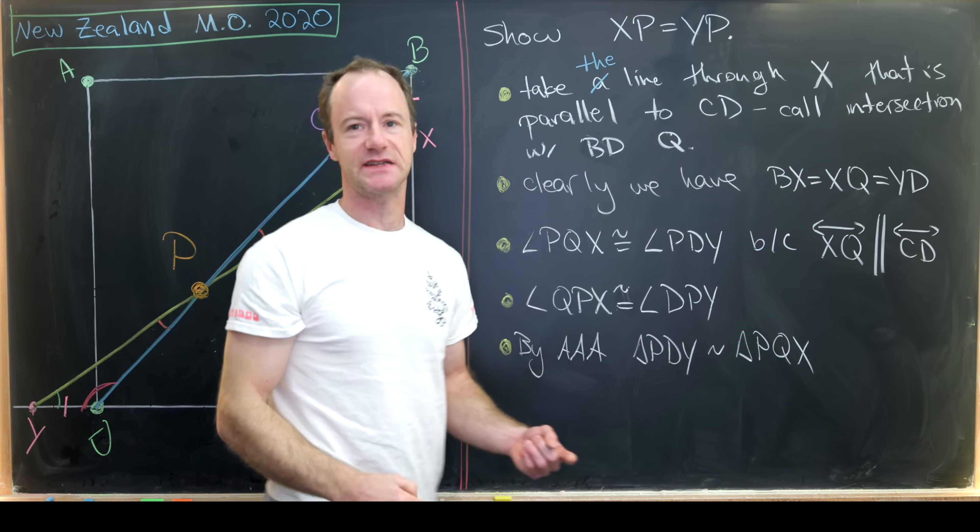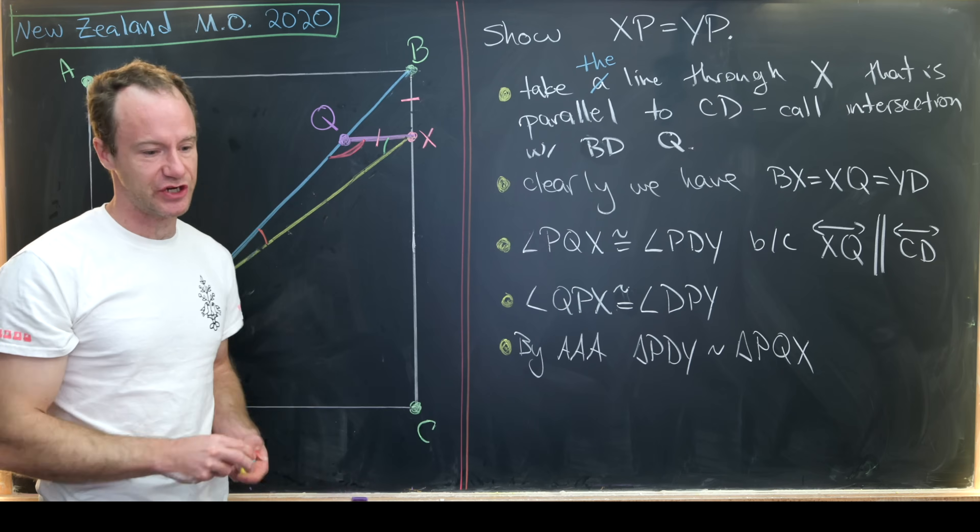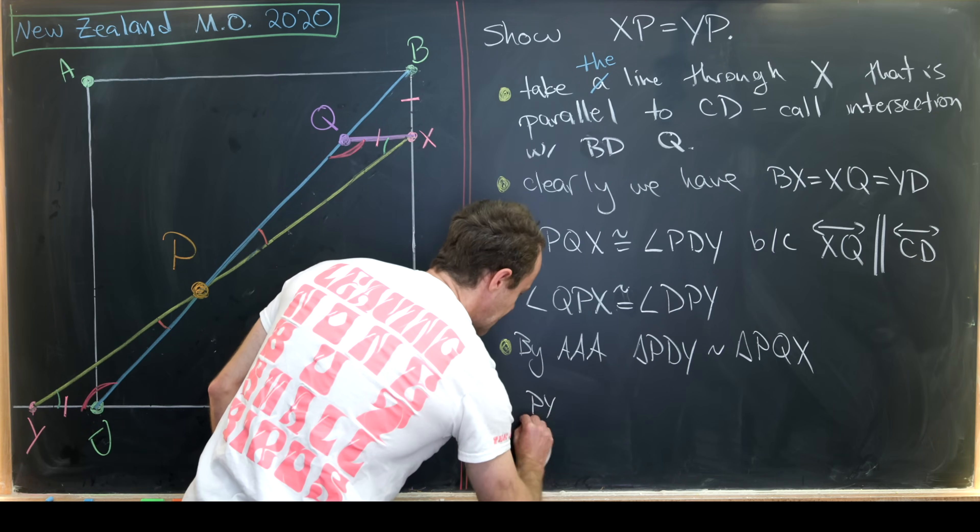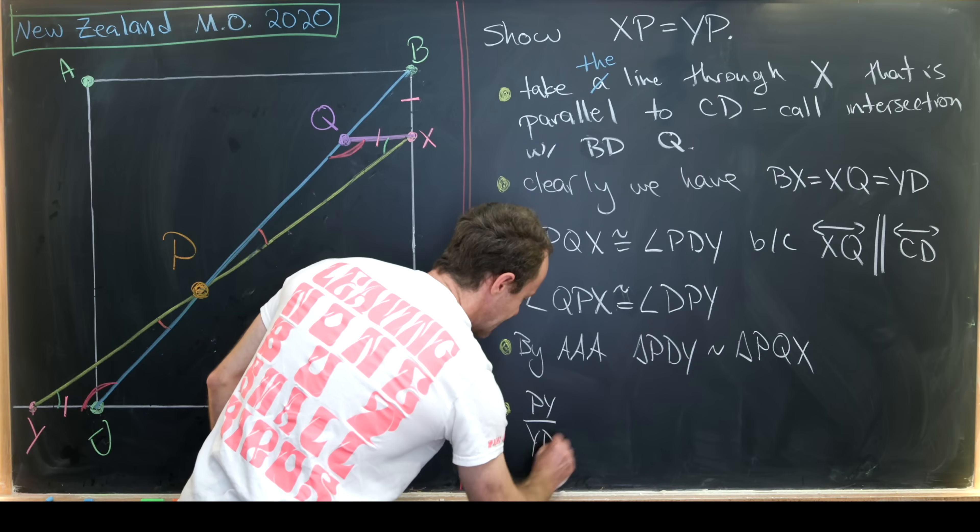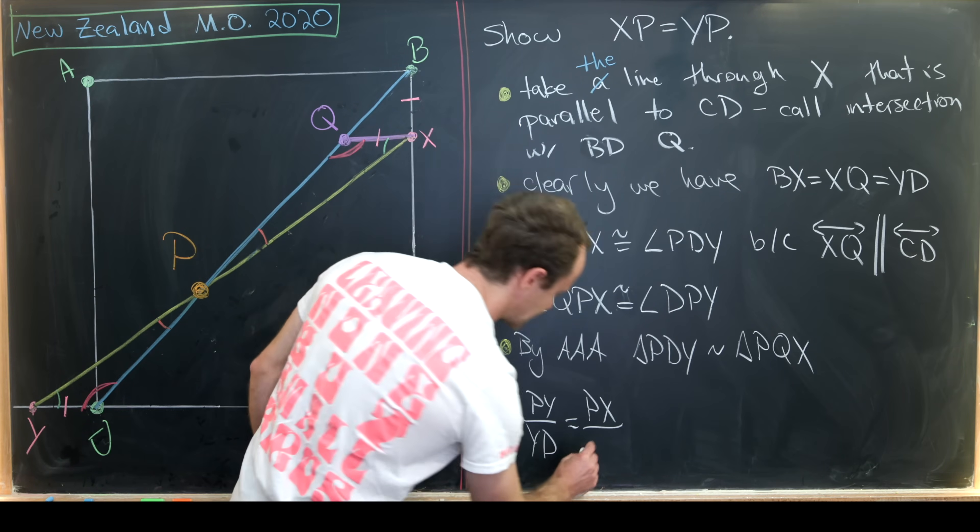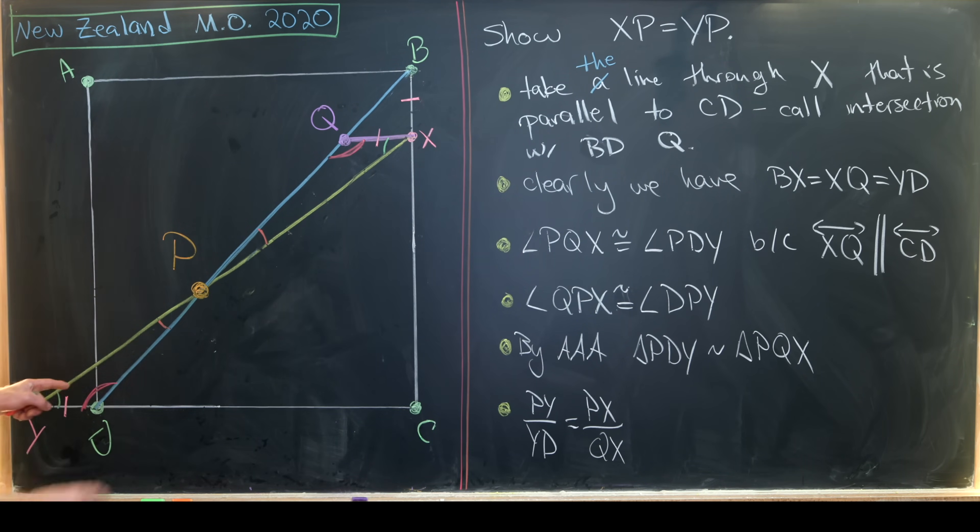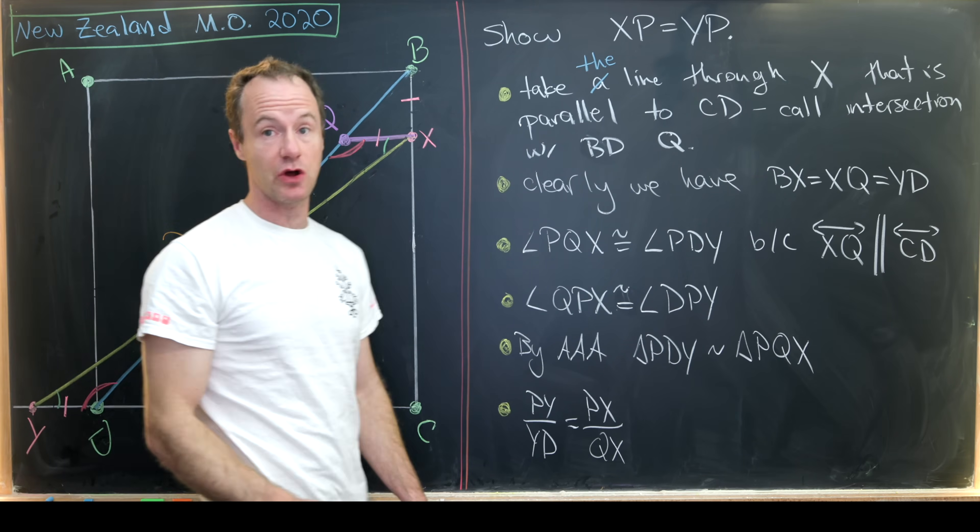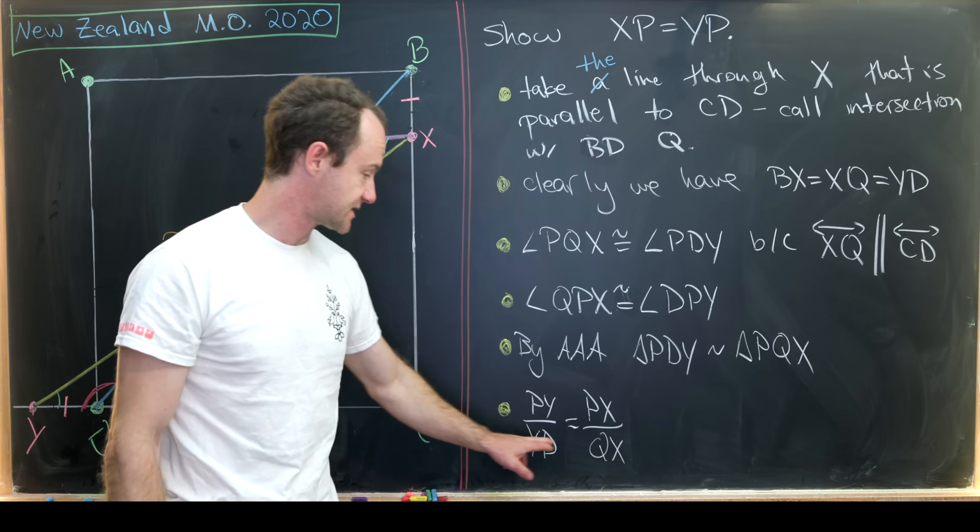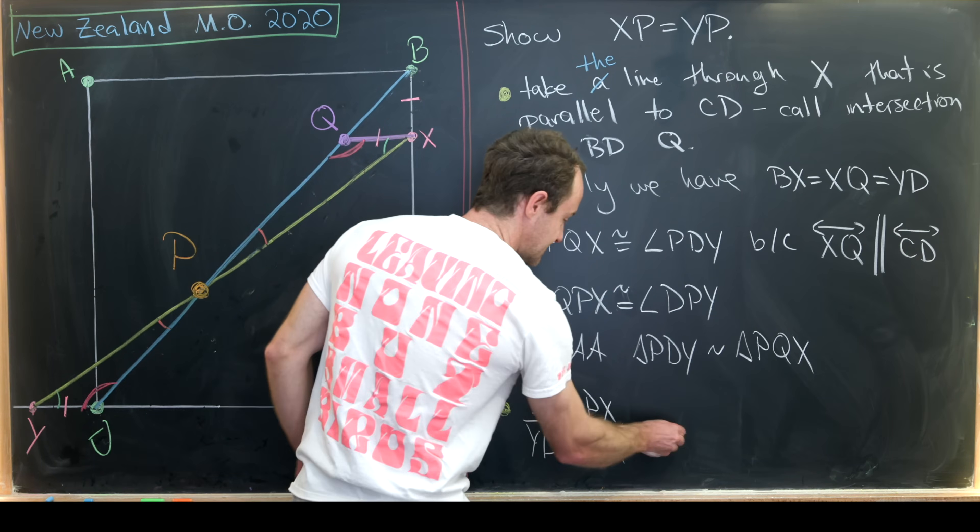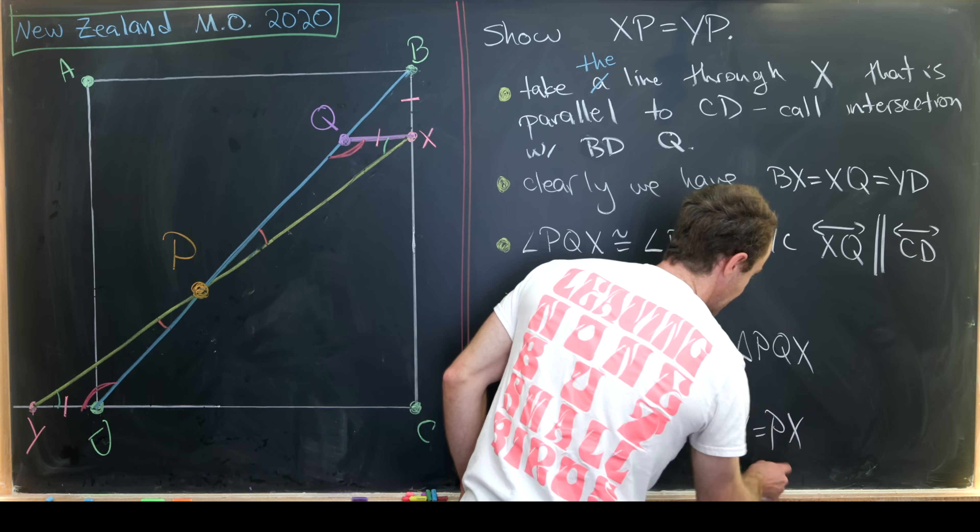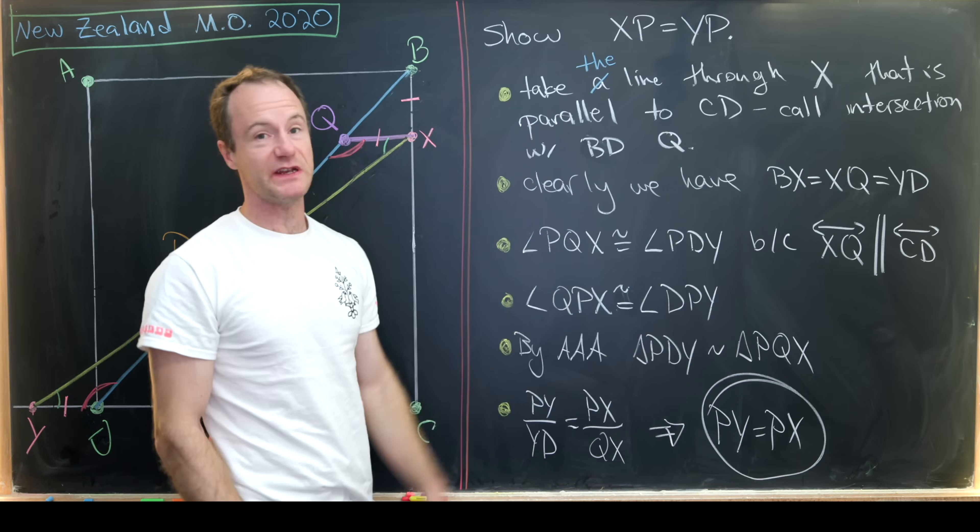But that means we can make a statement about the size of ratios between two sides. So we have side length PY divided by side length YD must be equal to side length PX divided by side length QX. Again, because those are corresponding sides in these two triangles, which we have shown to be similar. But then way up here, we have that YD is equal to QX. So these denominators are the same. But since those denominators are the same, that means these numerators are the same. So in other words, the length of PY is the length of PX. But that's exactly what we needed to show.